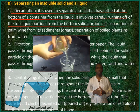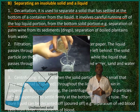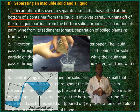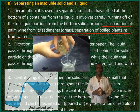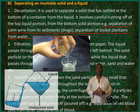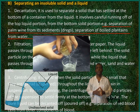Decantation is used to separate a solid that has settled at the bottom of a container from the liquid. It involves careful running off of the top liquid portion from the bottom liquid portion. Examples include the separation of palm wine from its sediments (the dregs), and the separation of boiled plantains from water.